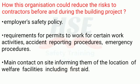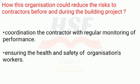General site safety rules such as a smoking policy and reference to the host employer's safety policy. Requirements for permits to work for certain work activities, accident reporting procedures, and emergency procedures. The main contact on site should inform contractors of the location of welfare facilities including first aid. Coordination with the contractor with regular monitoring of performance, ensuring the health and safety of the organization's workers.